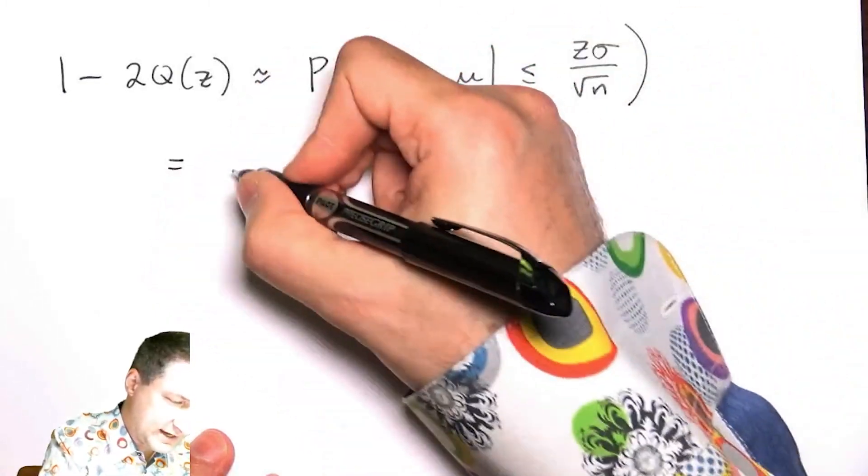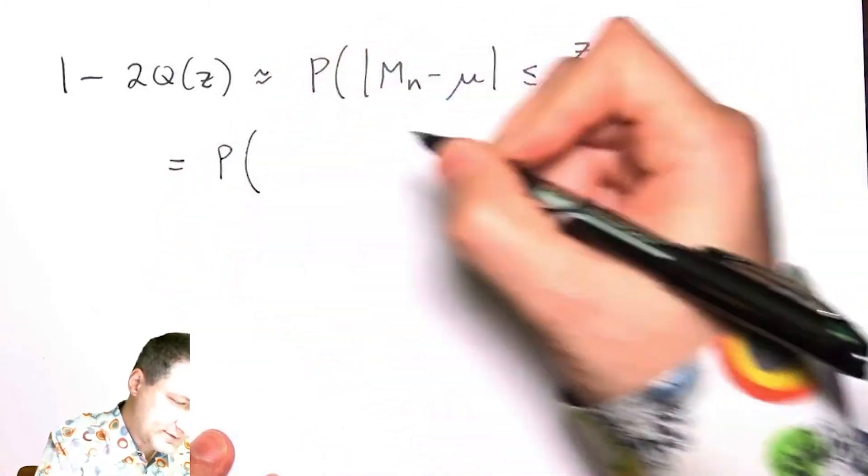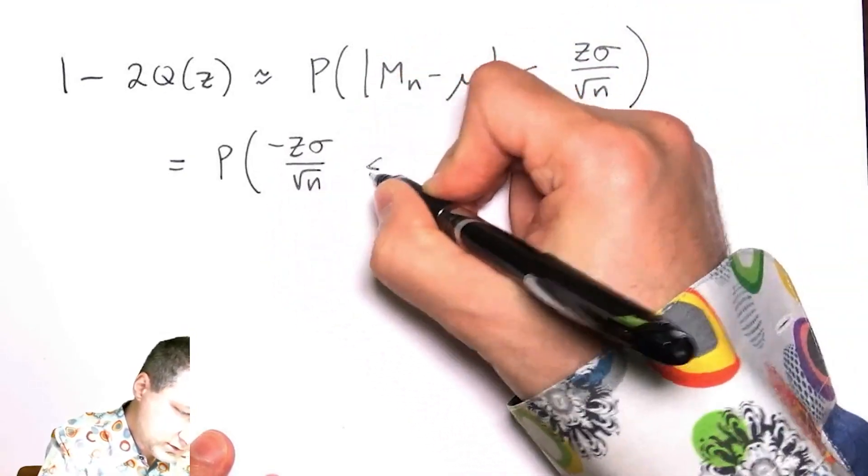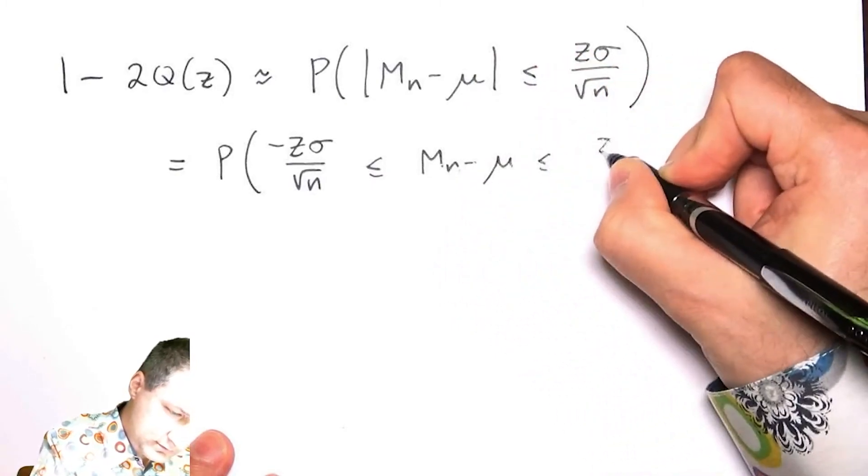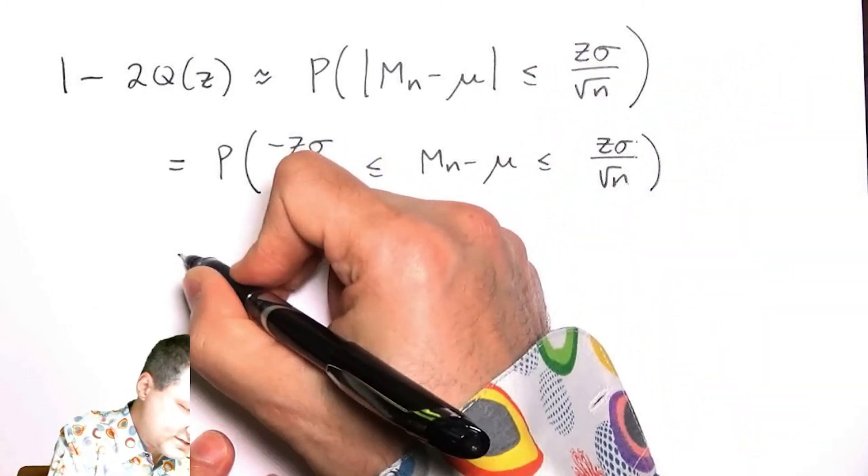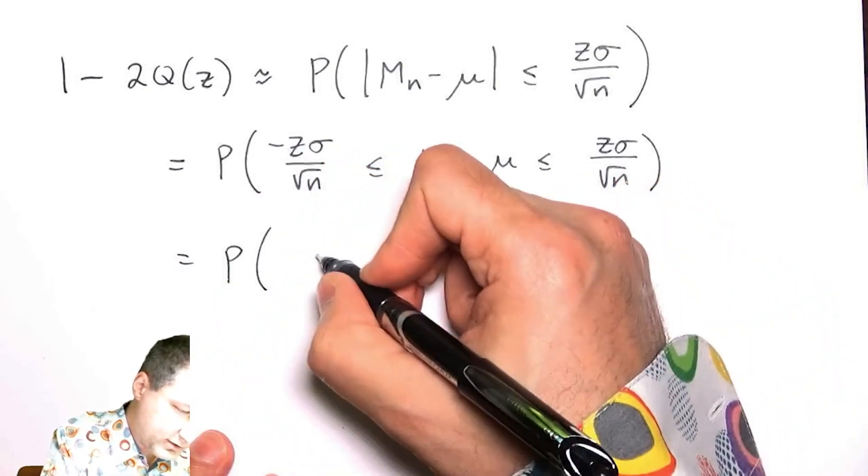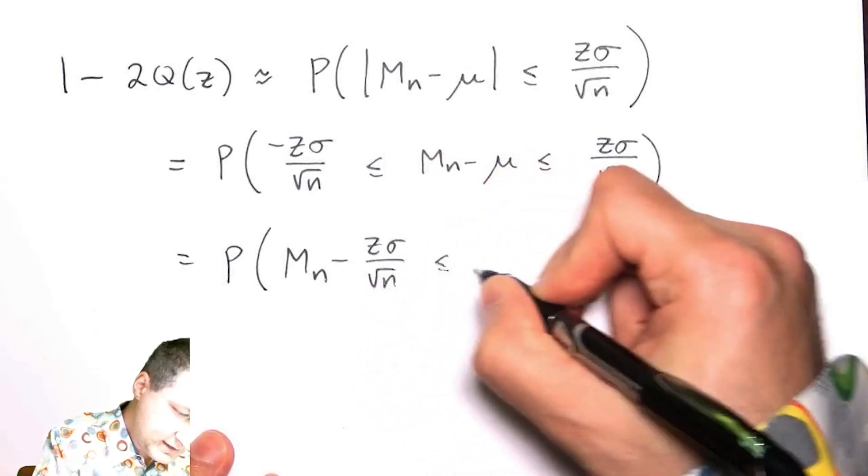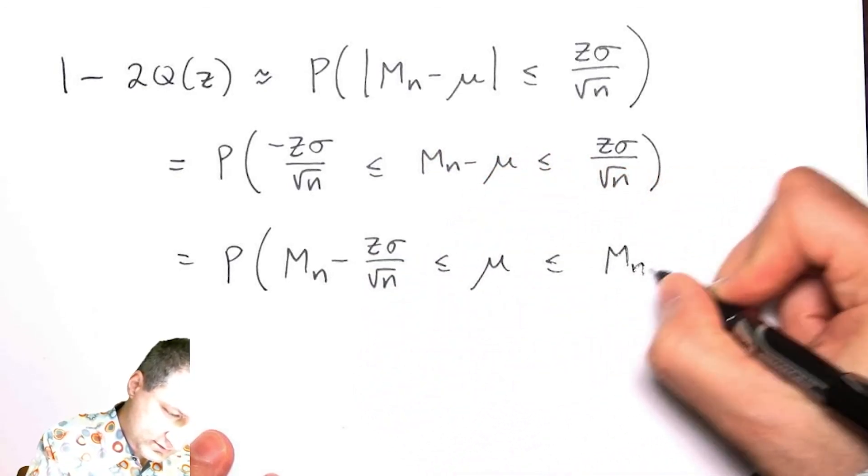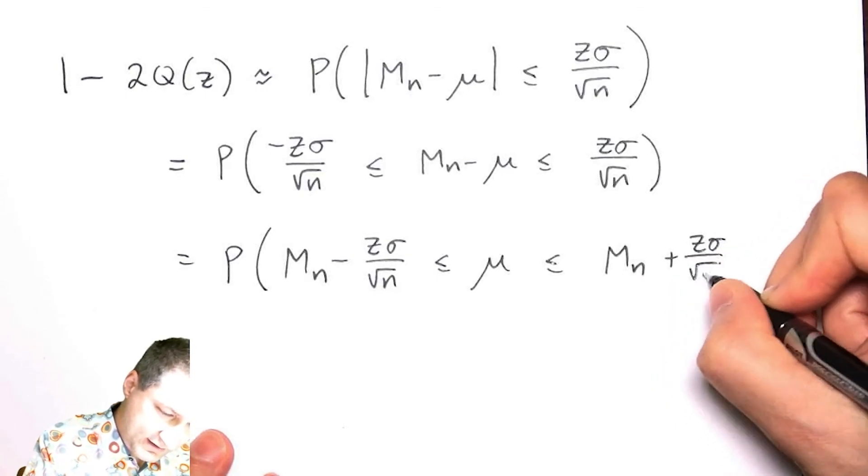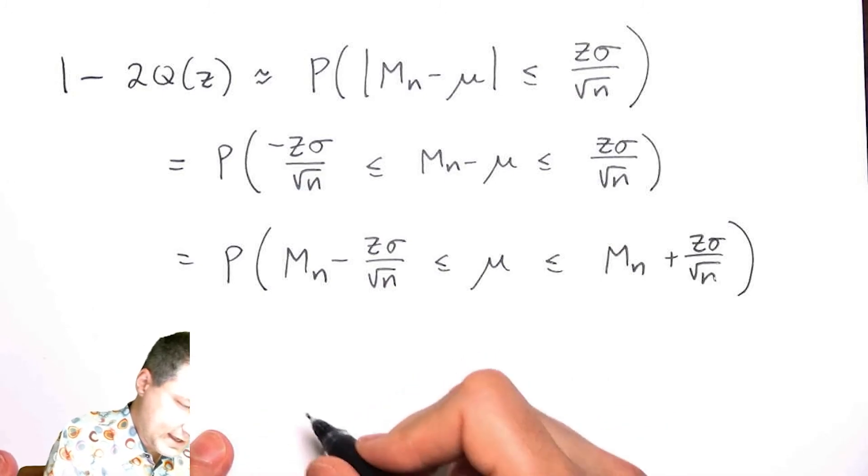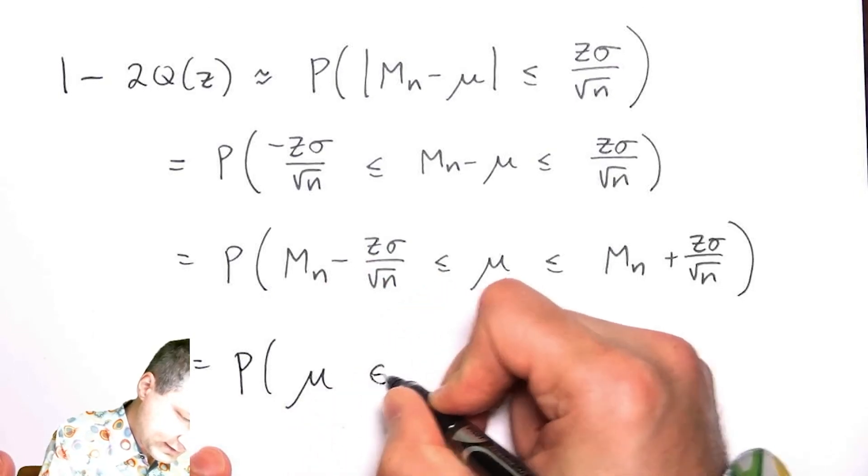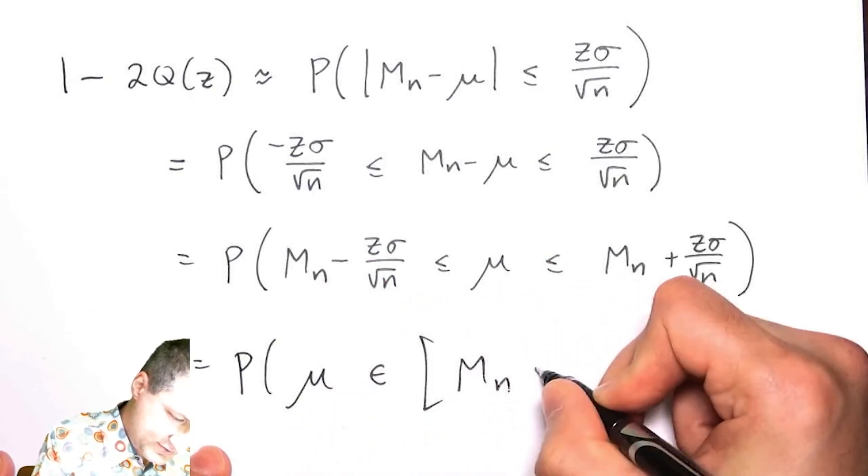This is like saying my mean is in this range, which is the same as saying μ is in [Mₙ - z·σ/√n, Mₙ + z·σ/√n]. This is in fact what the confidence interval is. The lower and upper bounds are basically this range.